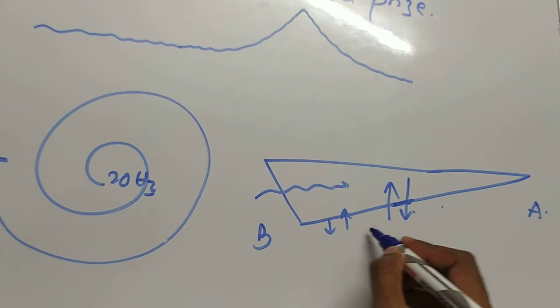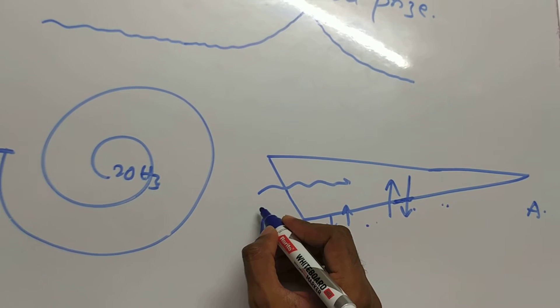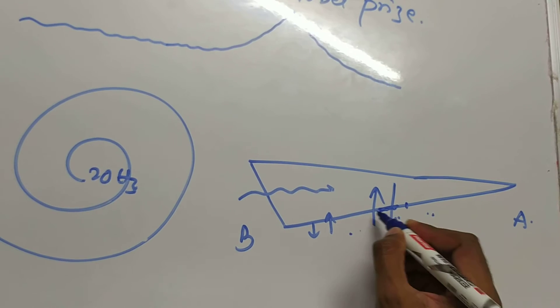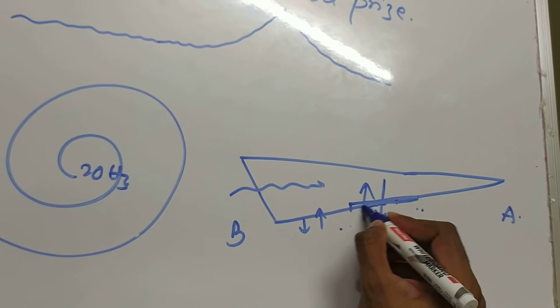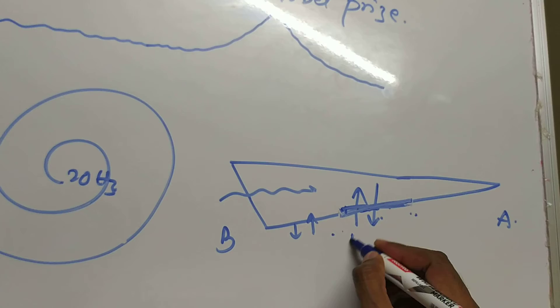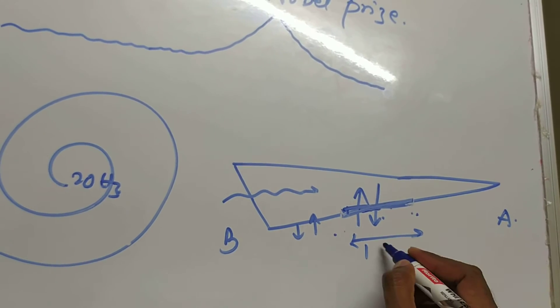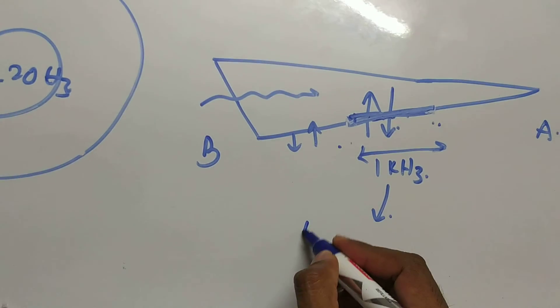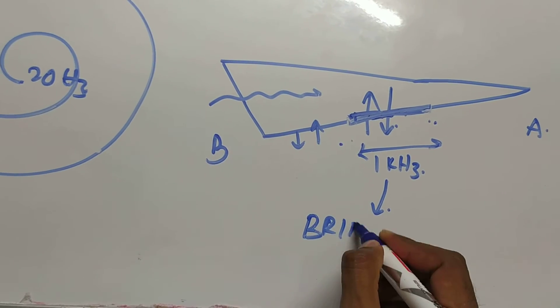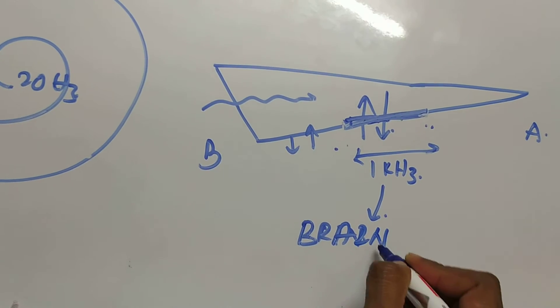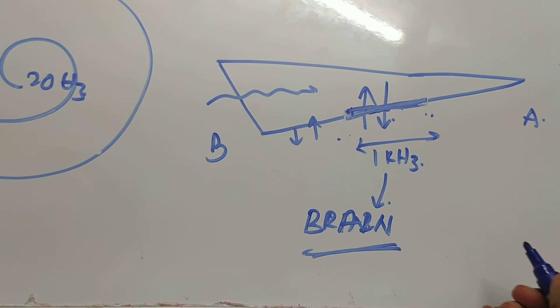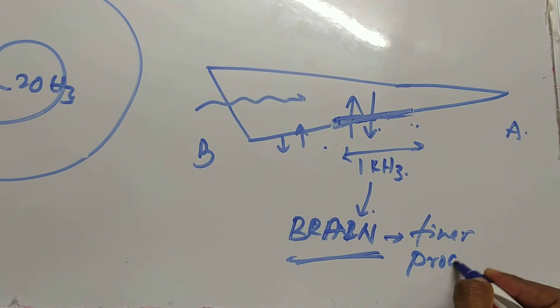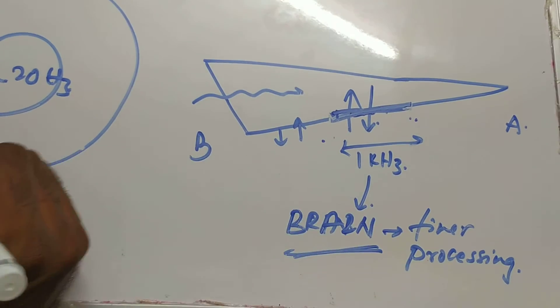However, it is quite coarse, meaning every sound stimulus will not stimulate one particular area of the cochlea but will stimulate a wider range, approximately at a distance of 1 kilohertz. But when it relays to the cortex, it undergoes finer processing and you are able to differentiate sound.